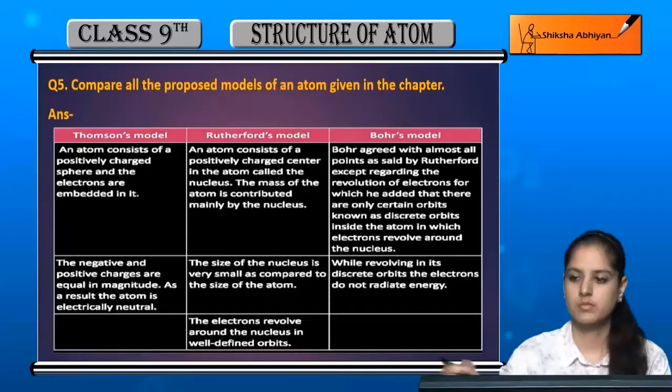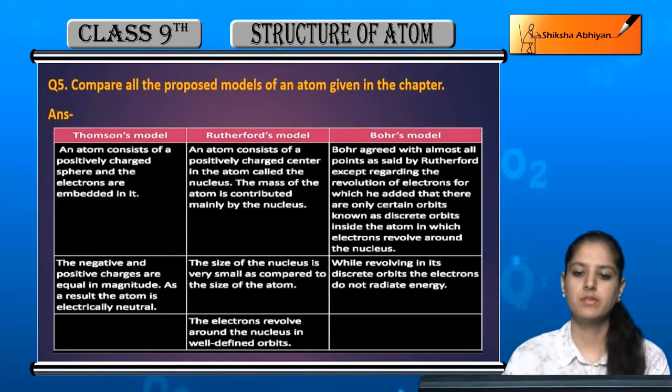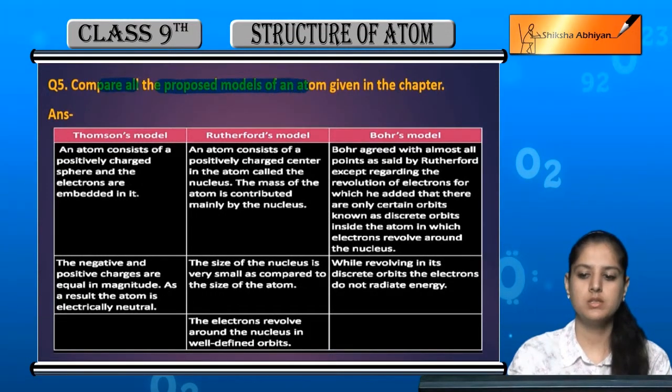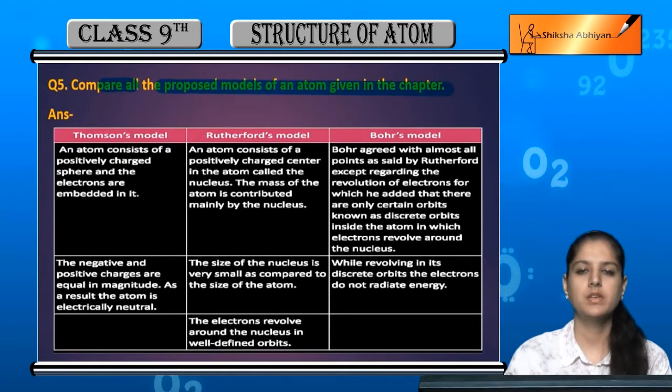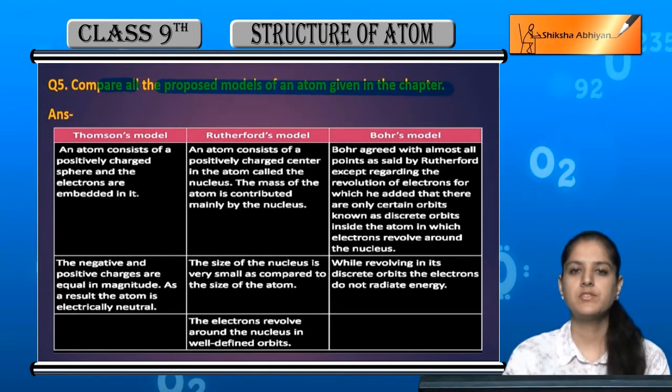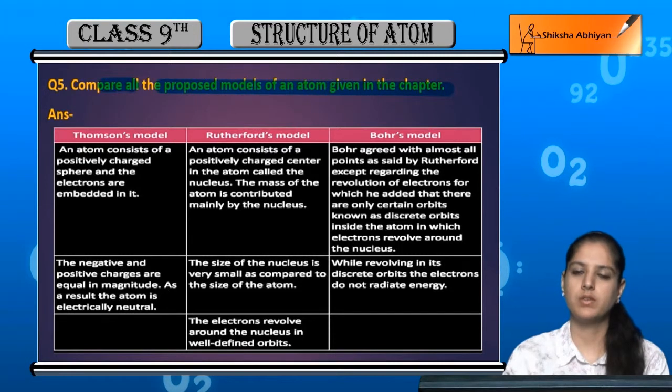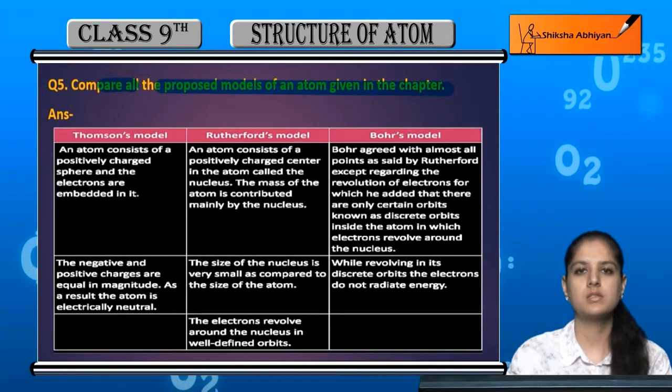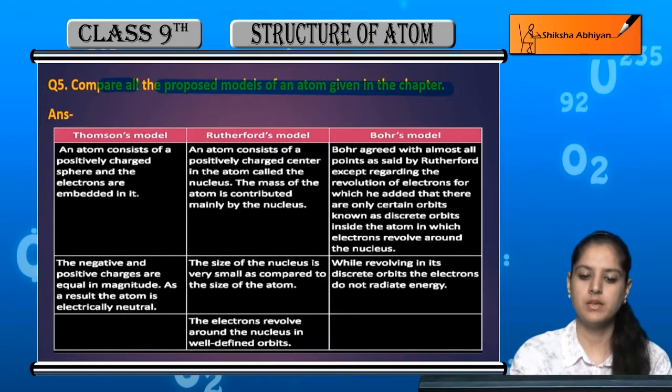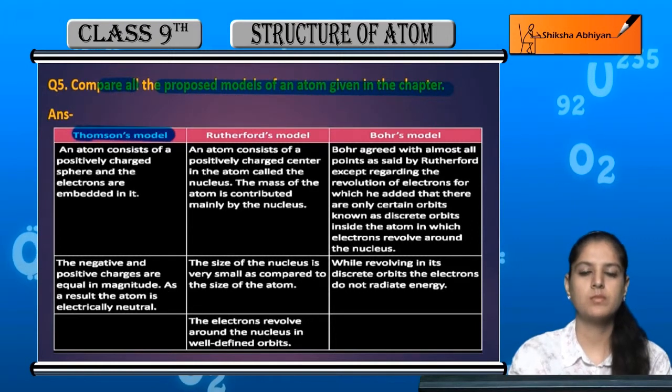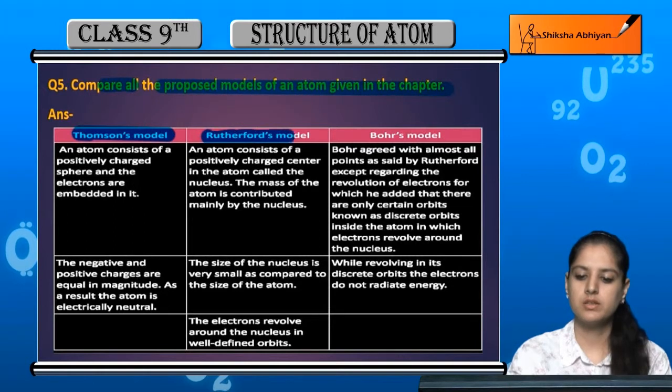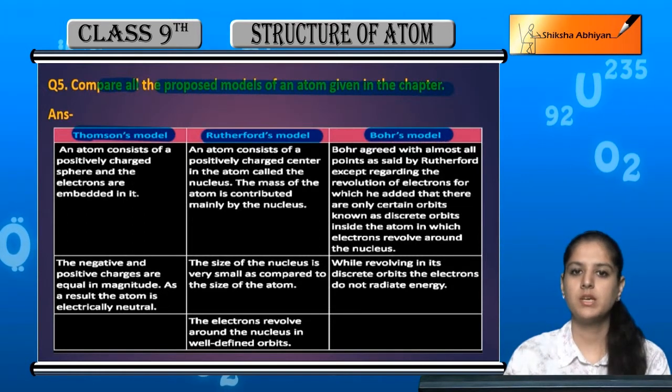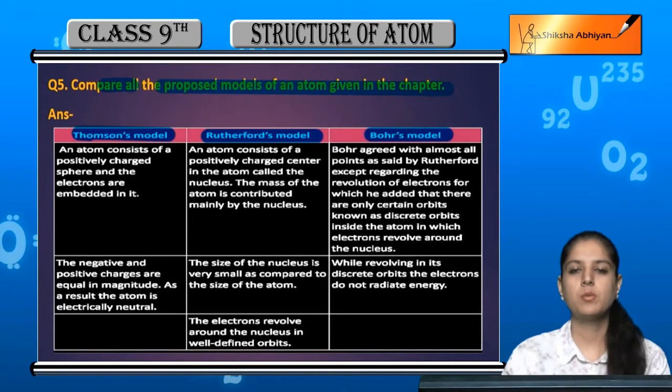Question number 5: Compare all the proposed models of an atom given in the chapter. So the three models discussed in this chapter are: first, Thompson's model; second, Rutherford's model; and third, Bohr's model. We will discuss the main points of each model.